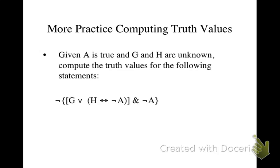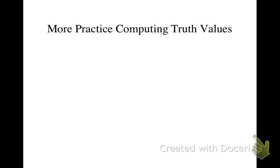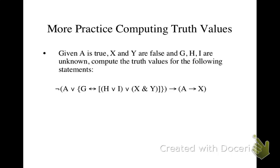Let's do another one. This one looks super complex. Here we have A is true, G and H and I are unknown, X and Y are false.